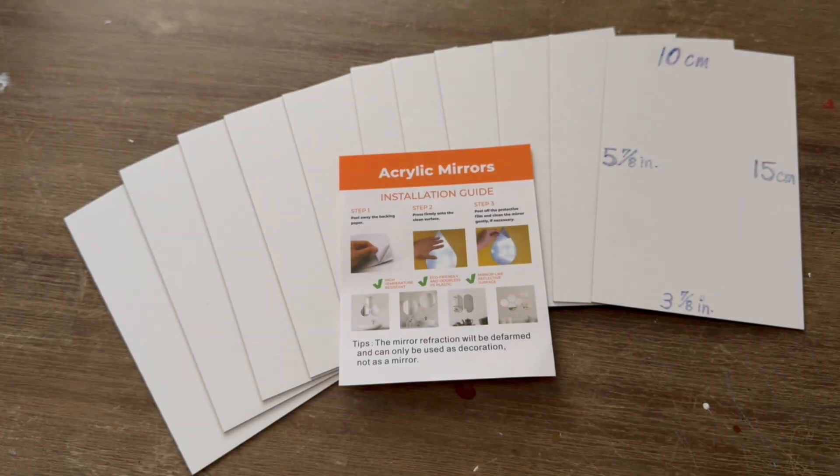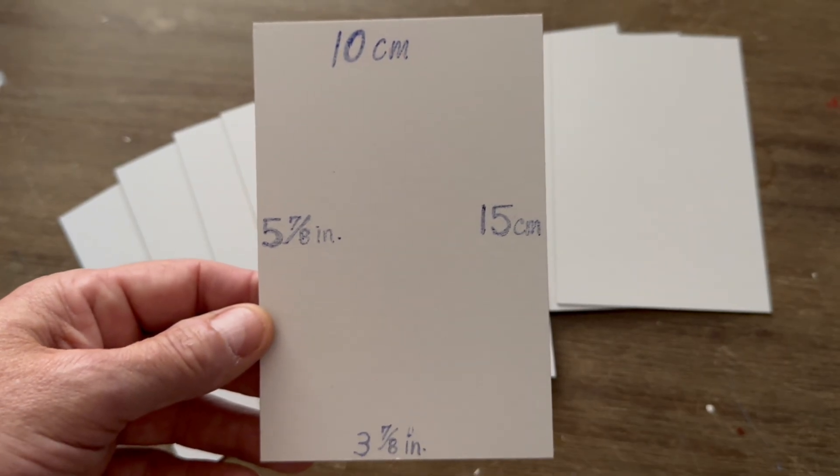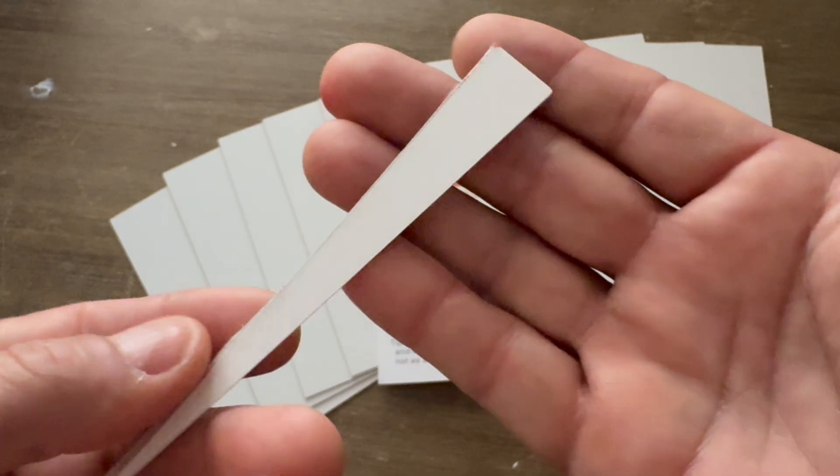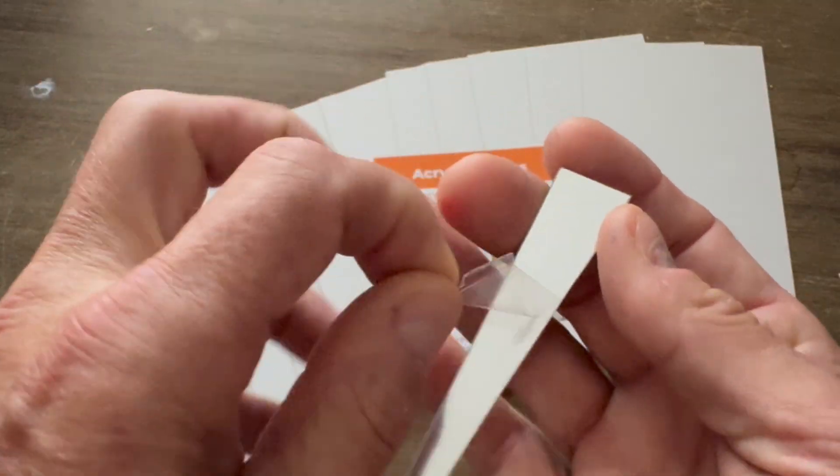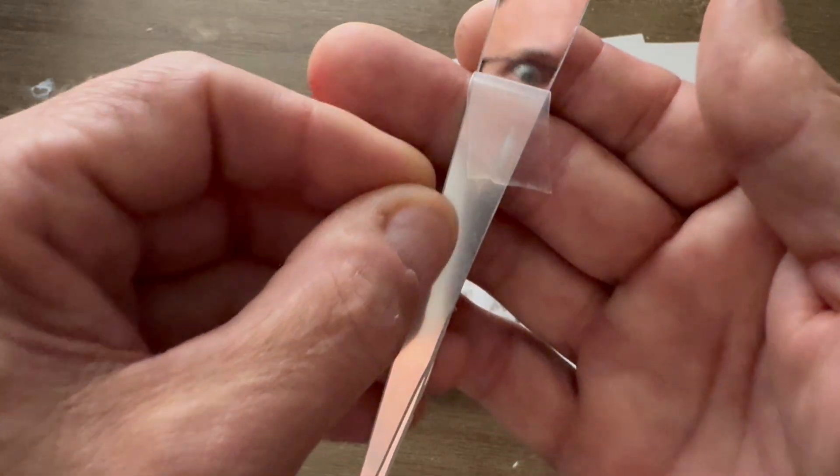You can purchase 12 4 by 6 inch acrylic mirror sheets for under $10. They have an adhesive back and a reflective side that's very mirror-like. And the best thing, you can cut it with a razor blade.